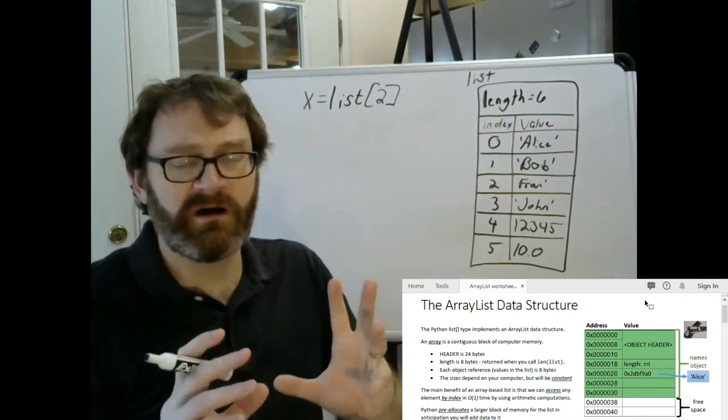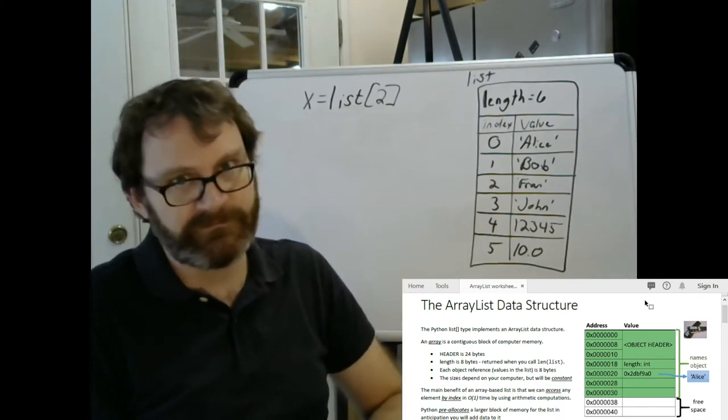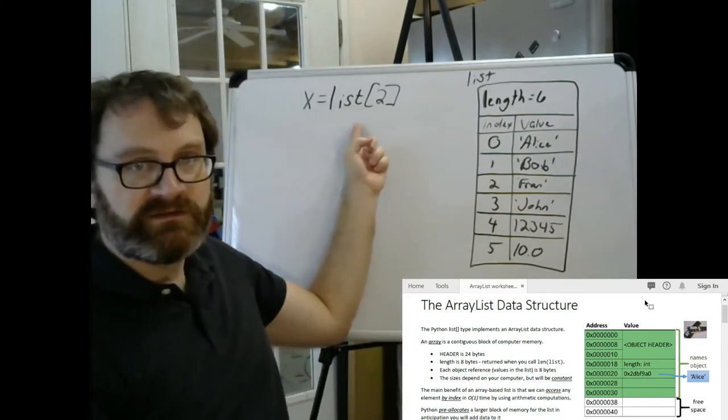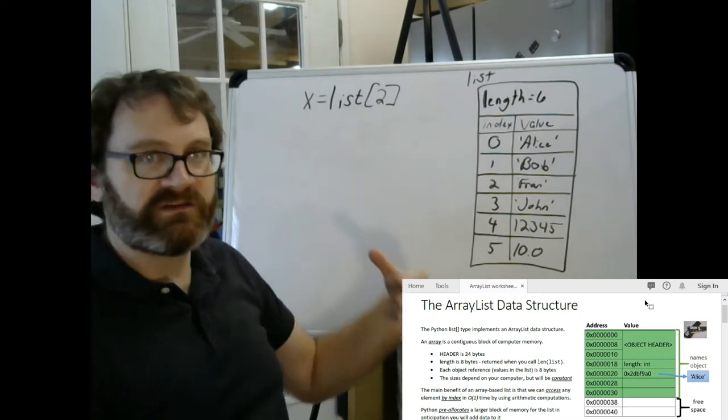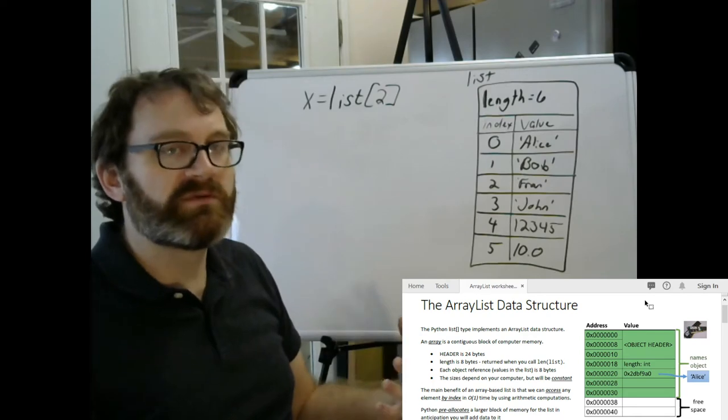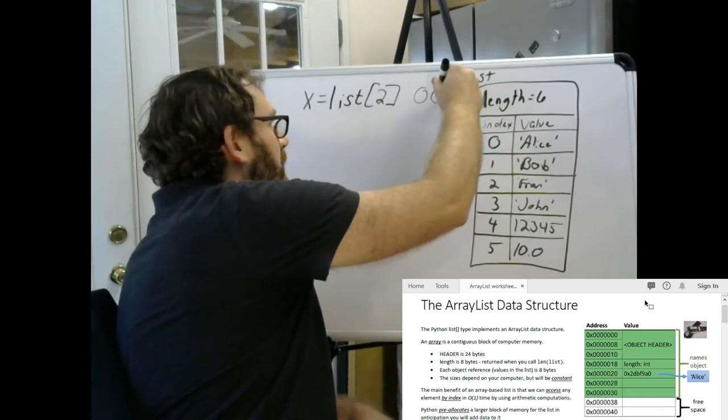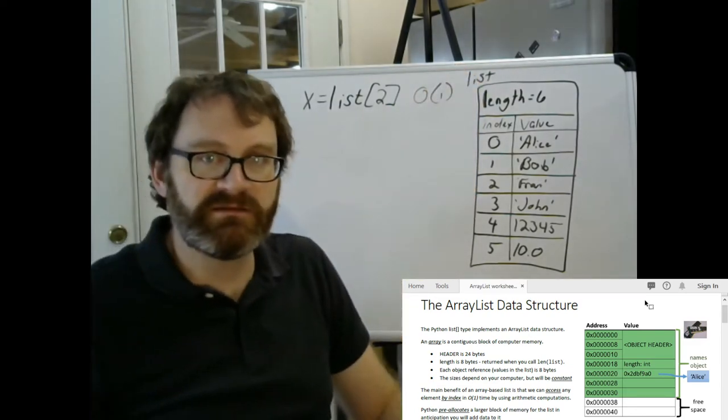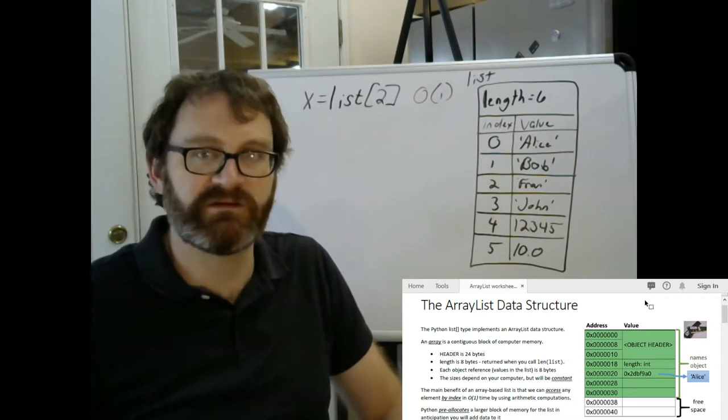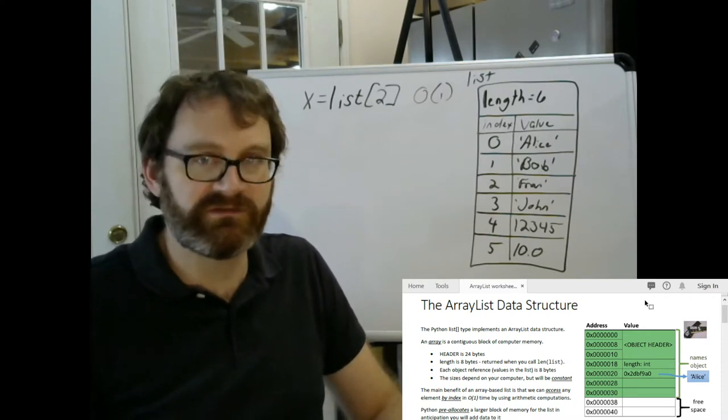So the first operation we'll talk about is this one here, indexing. Whenever you access a list element by its index number, that's called indexing. All indexing operations in Python are big O of one for the list data type, and that's because of this array list data structure that the list data type uses.